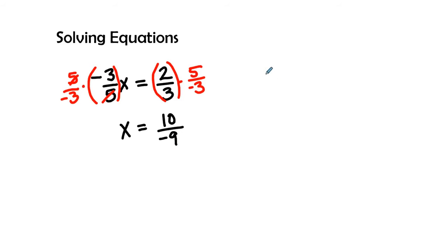Let's check our work. We have negative three-fifths x, but we're going to replace the x with ten over negative nine, equals two-thirds. Let's see how that goes. Negative three times ten is negative thirty. Five times negative nine is negative forty-five, and it should equal two-thirds.